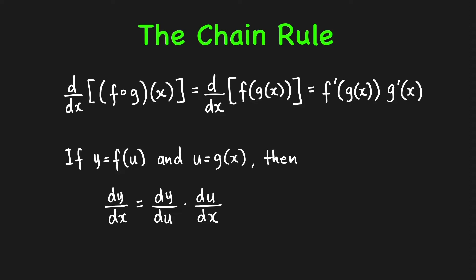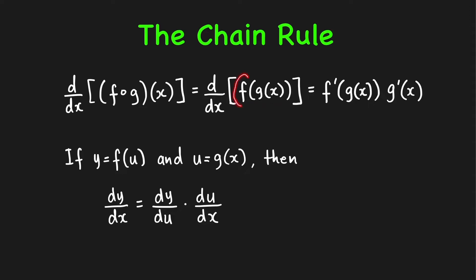The chain rule tells us that the derivative of the composite function f of g of x is equal to the derivative of f evaluated at g of x, times the derivative of g of x. So we take the derivative from the outer function to the inner function: first take the derivative of the outer function, evaluate it at g of x, and then multiply it with the derivative of the inner function, g prime of x.